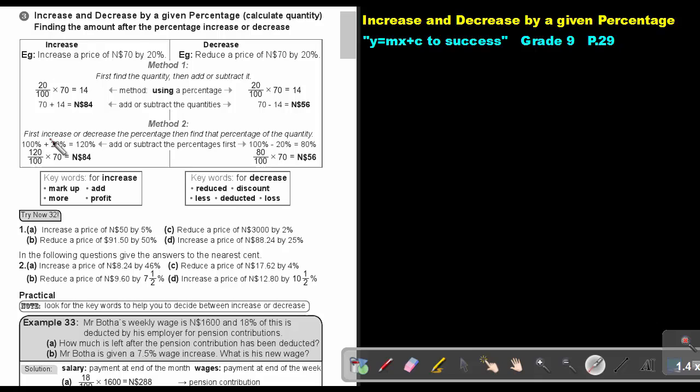Method 2: First increase or decrease the percentage, then find the percentage of the quantity. So take the full amount, which is 100%, then add the 20% due to the increase and that will give me 120%. And then it's 120 over 100 times 70 and the answer will be $84 Namibian Dollars.